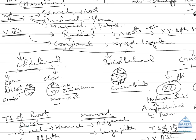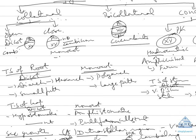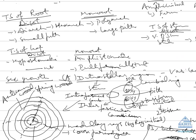Now coming to TS of root, the basic difference between TS of dicot and monocot root lies in: in dicot we are having diarch to hexarch xylem, while polyarch is found in monocots. Small pith is there in dicot, while large pith is there in monocot.